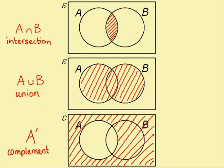So, to summarize, this means the intersection, that's this part. This means the union, that's everything in A and B. And this means the complement of A or not A. So, that's everything outside of A.